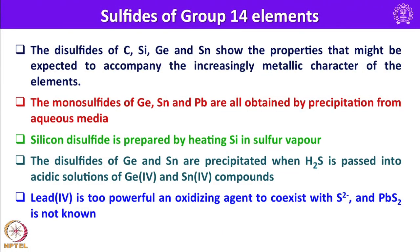Sulphides of group 14 elements are quite well known. The disulphides of carbon (CS2), silicon, germanium, and tin show properties accompanying the increasingly metallic character of the elements. The monosulphides of germanium, tin, and lead are obtained by precipitation from aqueous media. Silicon disulphide is prepared by heating silicon in sulfur vapor. The disulphides of germanium and tin are precipitated when H2S is passed into acidic solutions of Ge4+ or Sn4+ compounds. Lead 4+ is too powerful an oxidizing agent to coexist with S²⁻, so PbS2 is not known, similar to how PbO2 can be made but PbS2 cannot.